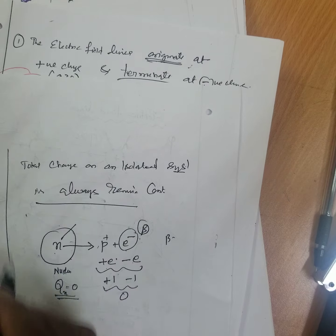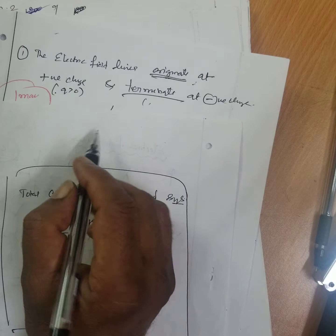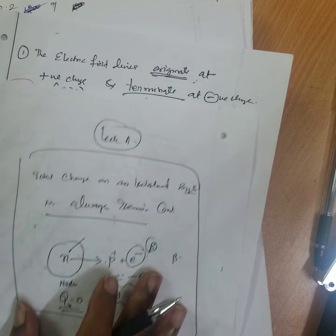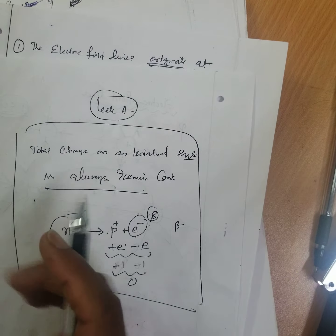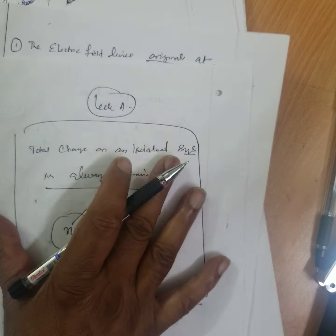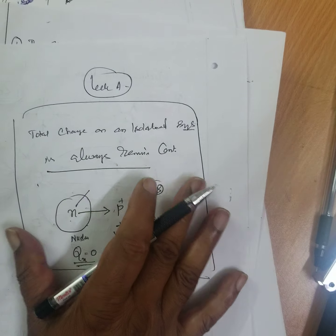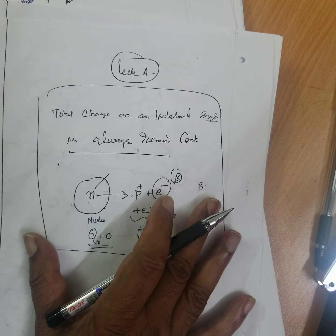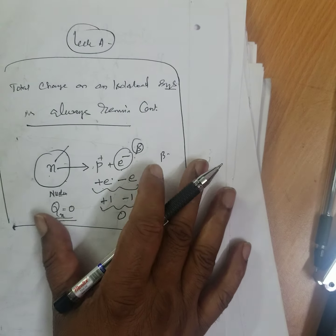This beta decay example comes under level B; you are doing level A. You can post your doubts and I will try to address them. Also go through your textbooks and listen to your teachers, and compare.